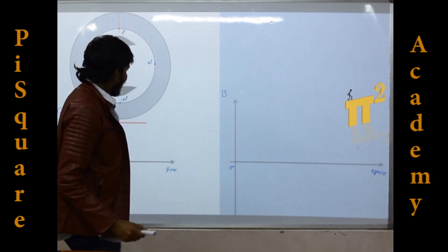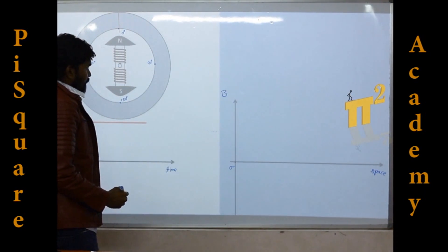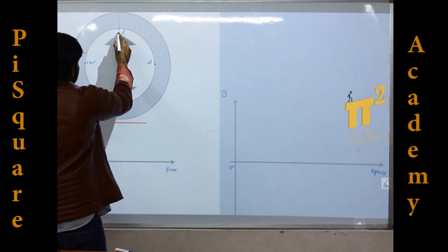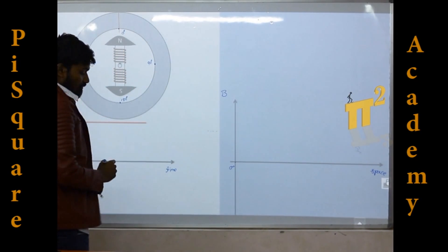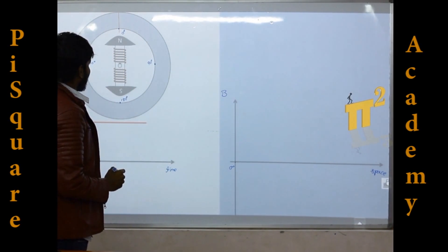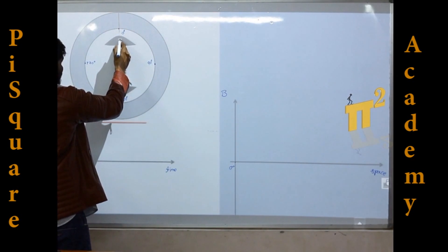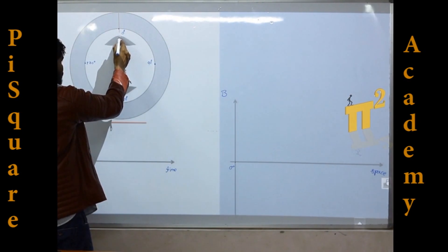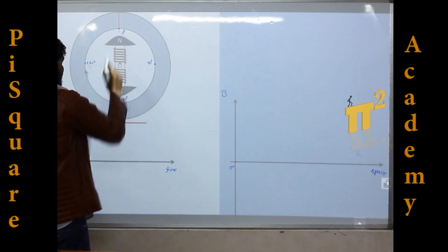Now here at this instant, the flux density is maximum here because the pole is just over here. Flux density is maximum over here.